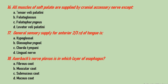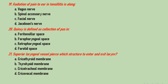Question number 18: Auerbach's nerve plexus is in which layer of the esophagus? Options are fibrous coat, muscular coat, submucosa, and mucous coat. The correct answer is the muscular coat, which is straightforward anatomy — it helps in muscular movement. Question number 19: radiation of pain to the ear in tonsillitis is along which nerve? Options are vagus nerve, spinal accessory nerve, facial nerve, and Jacobson's nerve. Jacobson's nerve supplies the tonsil as well as the external auditory canal. Therefore, radiation of pain to the ear in tonsillitis is along Jacobson's nerve.